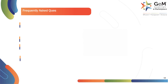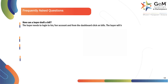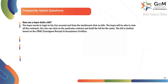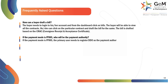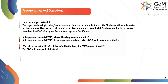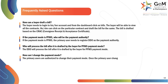Here are the frequently asked questions. How can a buyer draft a bill? The buyer needs to log in to his or her account and from the dashboard click on Bills. The buyer will be able to view all the contracts and can click on a particular contract to draft the bill. The bill is drafted based on the CRAC, consignee receipt and acceptance certificate. If the payment mode is PFMS, who will be the payment authority? The primary user needs to register DDO as the payment authority. Who will process the bill after it is drafted by the buyer for PFMS payment mode? The DDO will process the bill. How can I change the payment mode? The primary users are authorized to change their payment mode. Once changed, the payment mode will display to users, that is buyers, DDOs, etc.